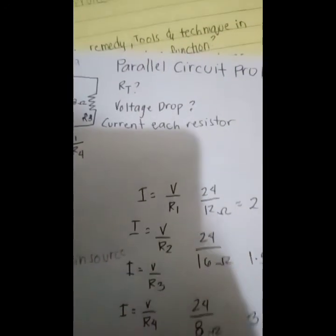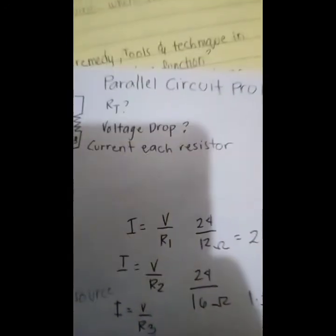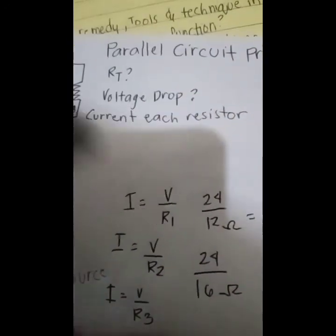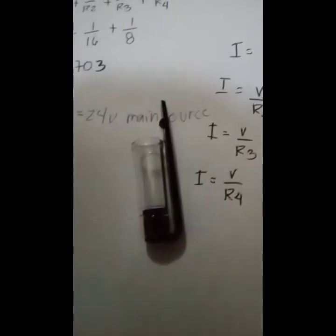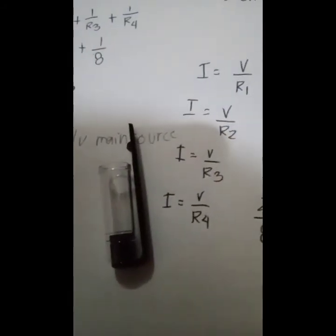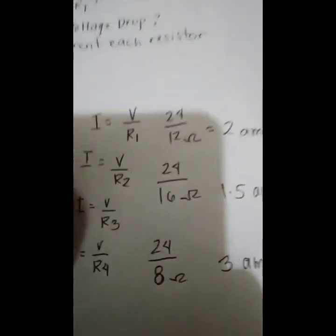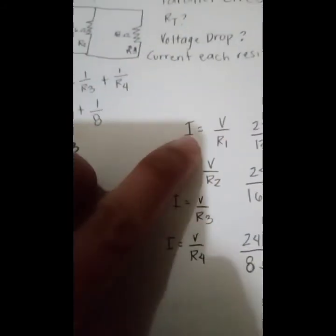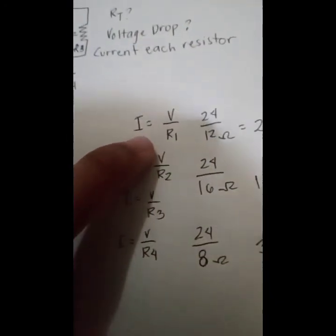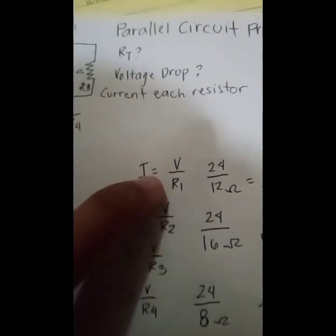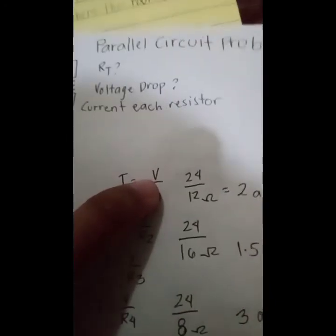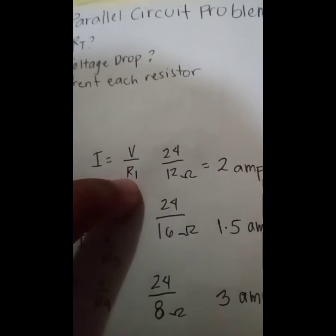We need to find the current through each resistor. As you can see, the formula to find the current is: current is equal to the voltage divided by the resistance.